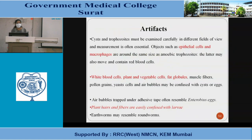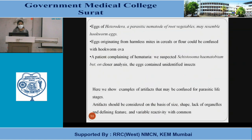Artifacts: cysts and trophozoites must be examined carefully across different fields of view, and measurement is often essential. Objects such as epithelial cells and macrophages are around the same size as amoebic trophozoites, and the latter may be motile and contain red blood cells. White blood cells, plant and vegetable cells, fat globules, muscle fibers, pollen grains, yeast cells, and air bubbles may be confused with cysts or eggs. Air bubbles trapped under adhesive tape may resemble Enterobius eggs. Plant hair fibers are easily confused with larvae, and earthworms may resemble roundworms. A patient complaining of hematuria suspected for Schistosoma haematobium — on closer analysis, eggs contained unidentified insects.